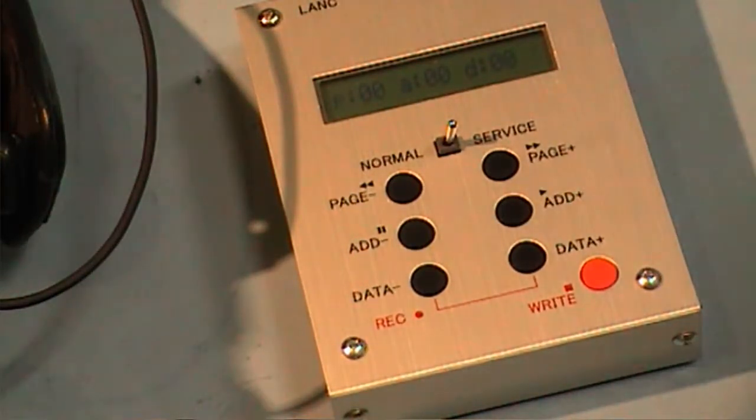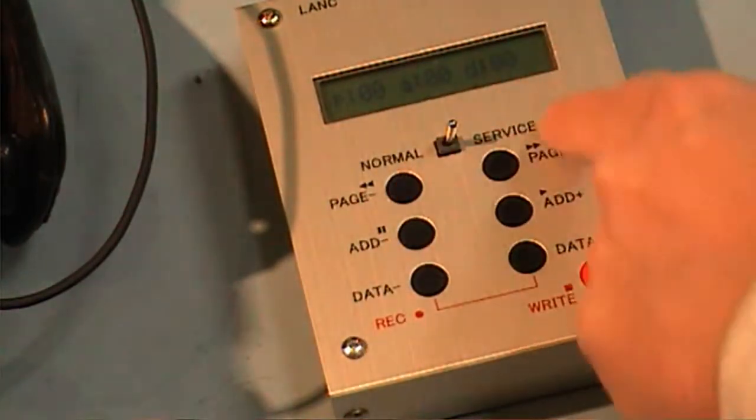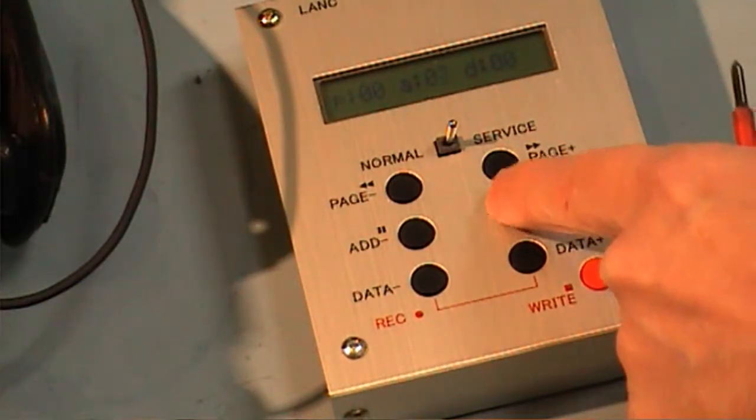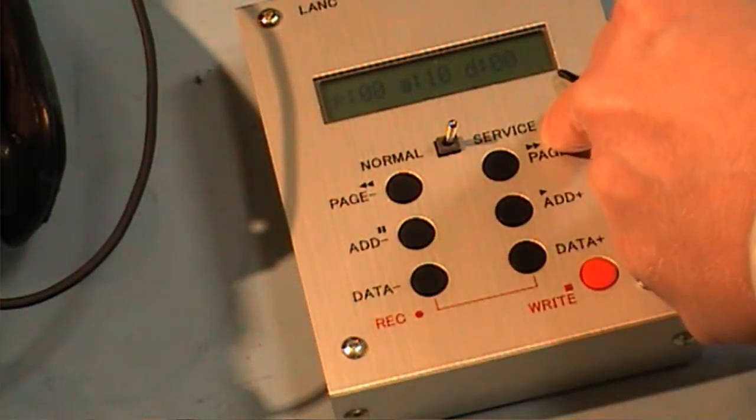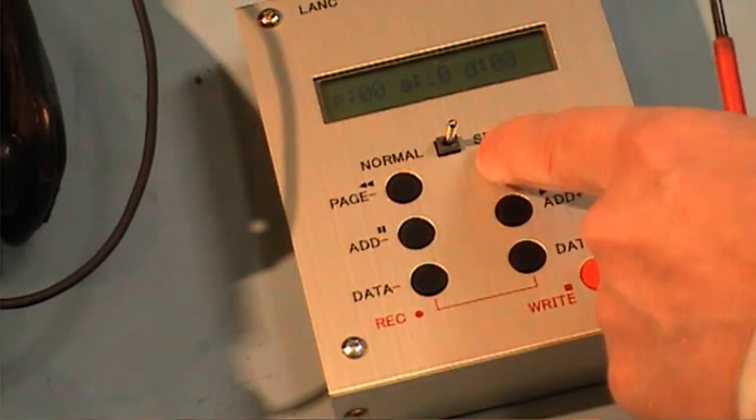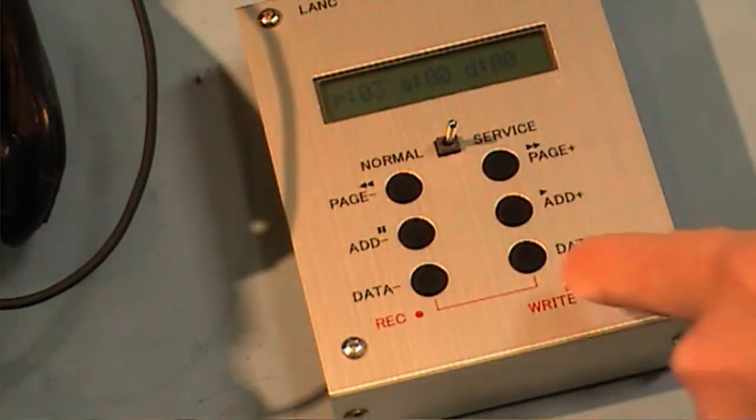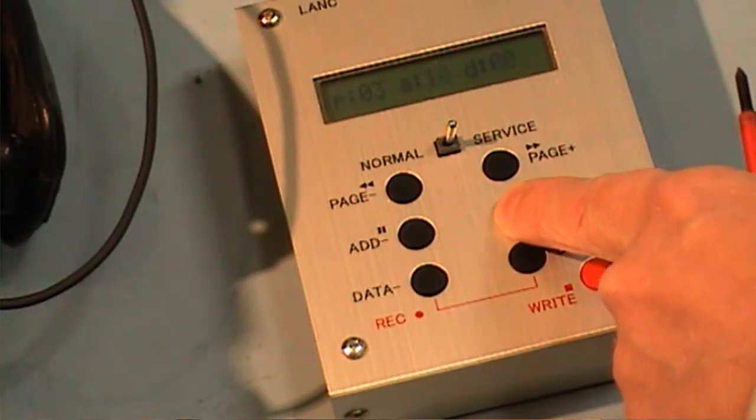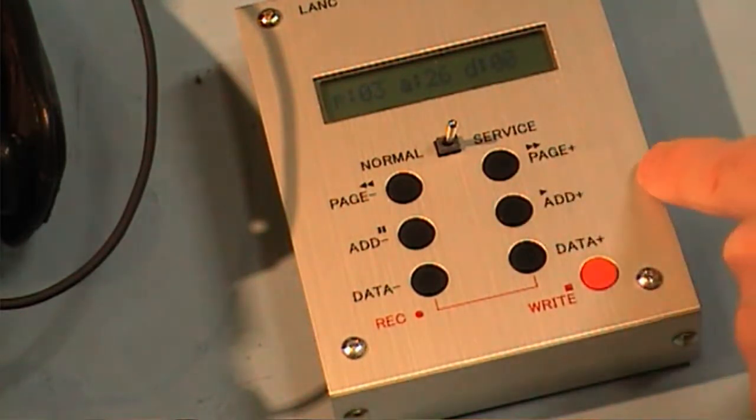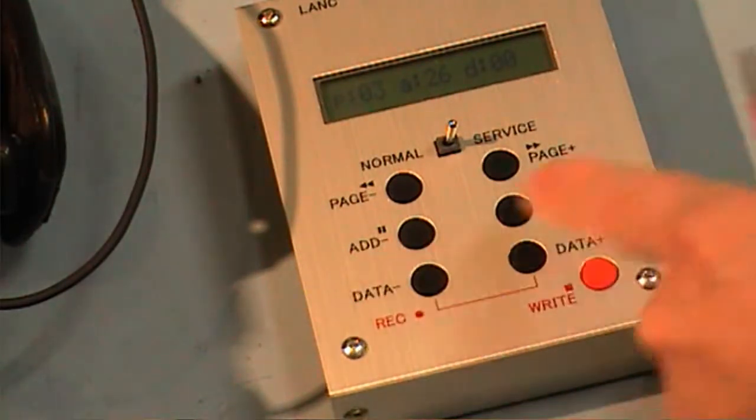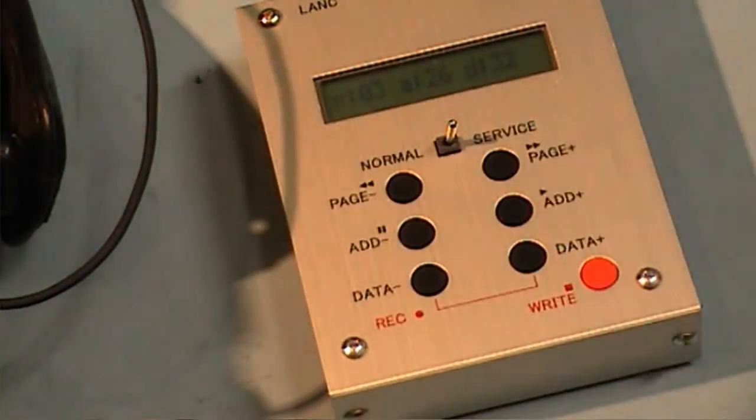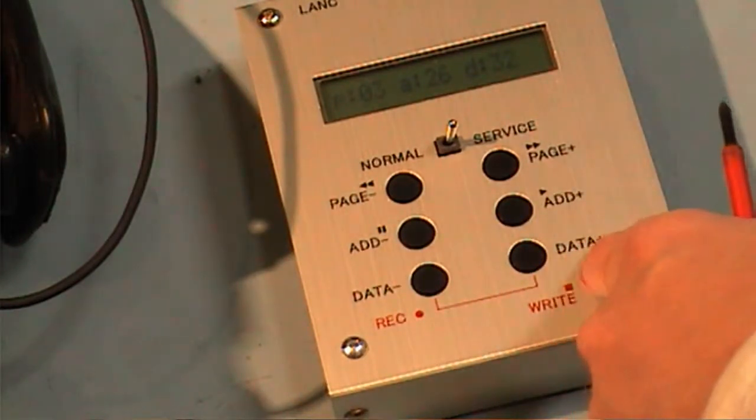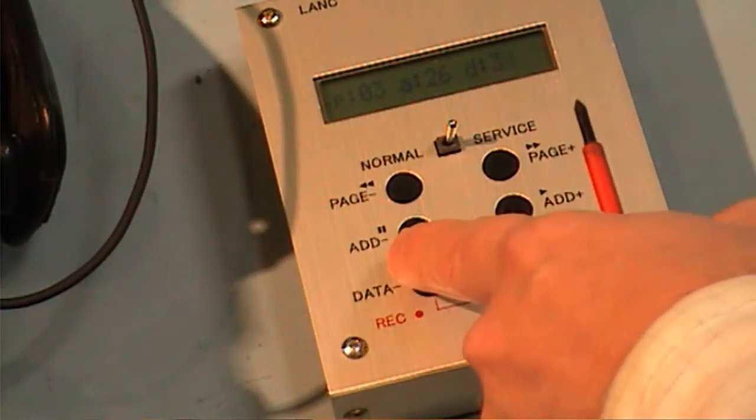Now first what we have to do is go to address 10, page 0, address 10. Check the data is 00—it is 00. Now we go to page 3, address 26, and set the data to 31.